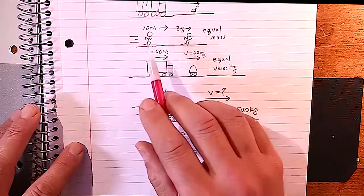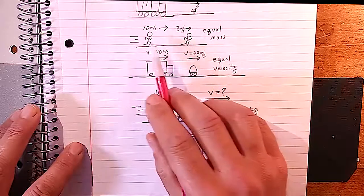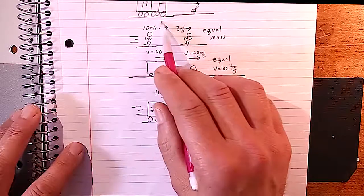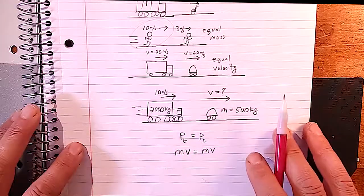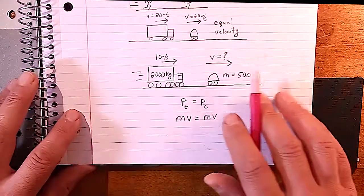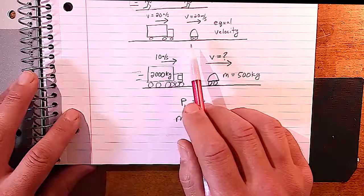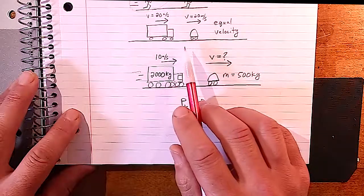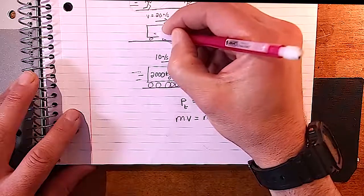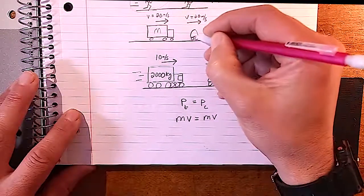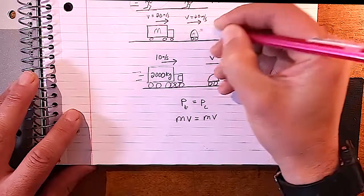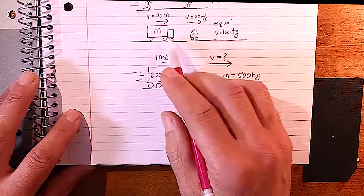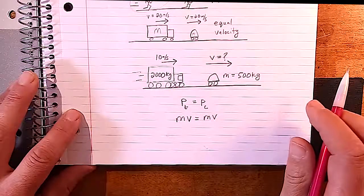If two runners have equal mass but one is running faster, the faster one has more momentum. What about two objects with equal velocity but different masses? If a truck and a small car are going at the same velocity, the truck — having greater mass — will have more momentum.